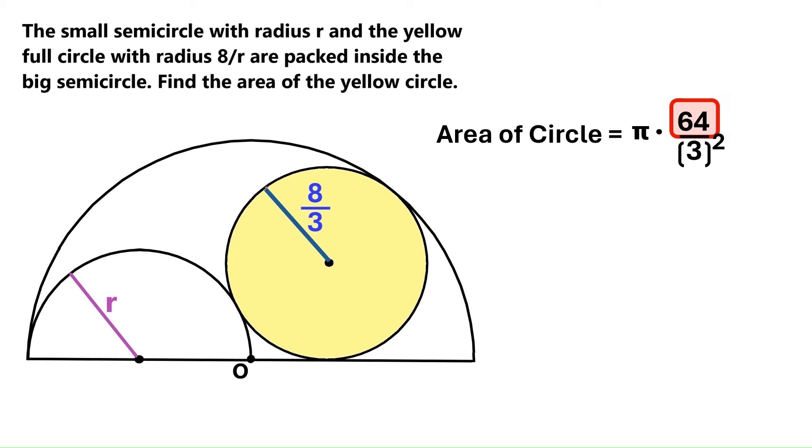8 squared is 64. And 3 squared is 9. The area of the circle is 64 pi over 9.